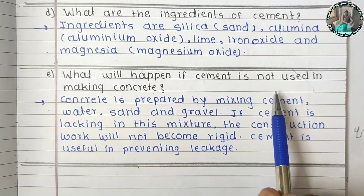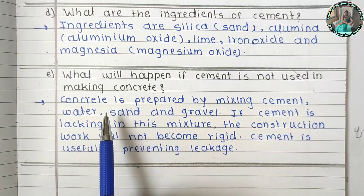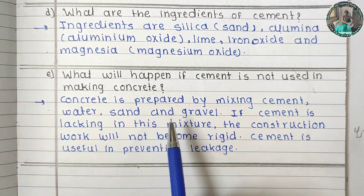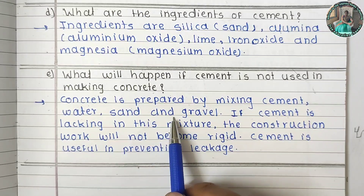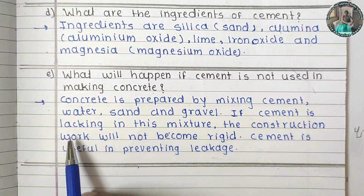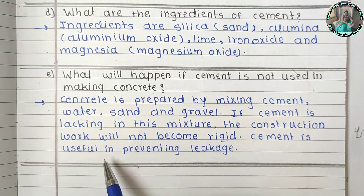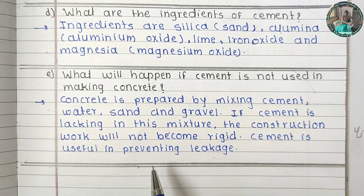What will happen if cement is not used in making concrete? Concrete is prepared by mixing cement, water, sand, and gravel. If cement is lacking in this mixture, the construction work will not become rigid. Cement is useful in preventing leakages. Without cement, the concrete won't be strong, leakages can occur, and many other structural problems will arise.